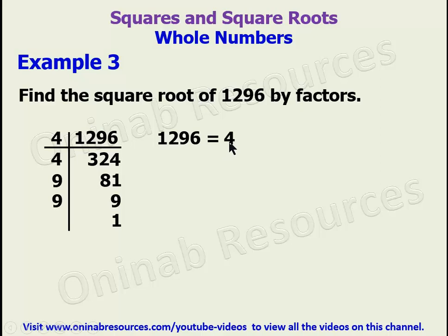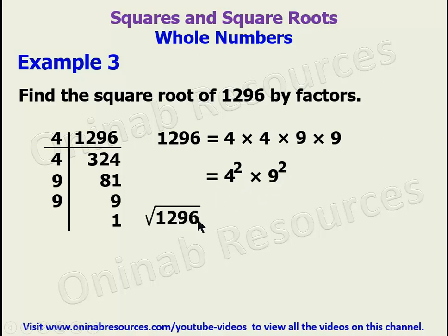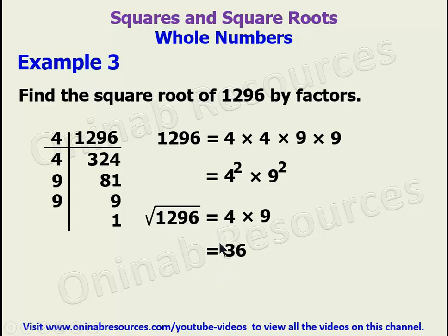So 1296 equals 4 times 4 times 9 times 9. We can write this as 4 squared times 9 squared. Therefore the square root of 1296 is 4 times 9, since we divide each power of 2 by 2. That gives us 4 times 9, which is 36. The square root of 1296 is 36. In this example we made use of perfect squares that are factors of 1296.